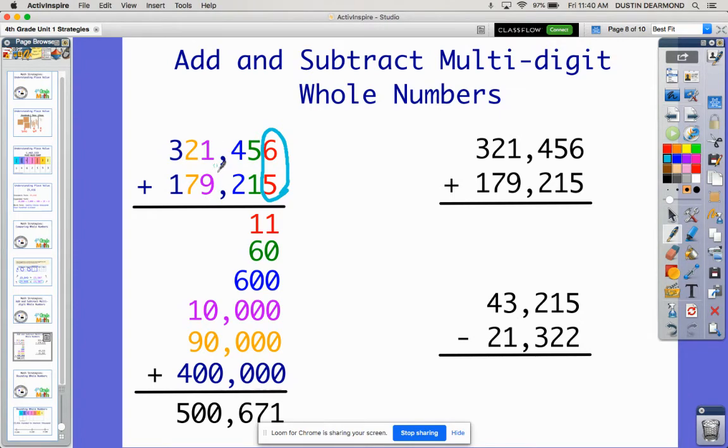And we would continue on with the thousands. So 9,000 and 1,000 gives me 10,000, 7,000 and 2,000, or 70,000 and 20,000. 7 and 2 makes 9 or 90,000, and then 300,000 and 100,000 gives me 400,000. And then I'd put all those partial sums together to get my answer of 500,671.